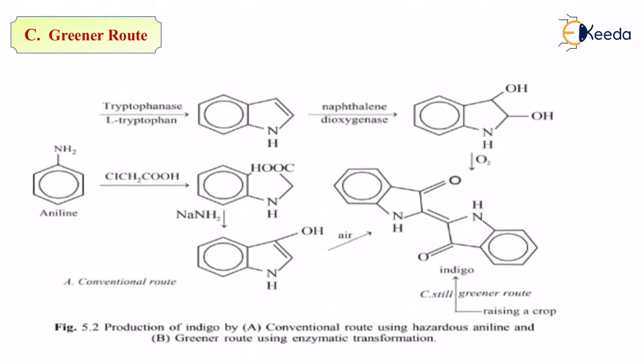This compound, in the presence of naphthalene dioxygenase — naphthalene being two benzene rings stuck together — undergoes reaction where two OH groups get attached at the ortho and meta positions. To this, if we add oxygen, the oxygenation process occurs, giving us indigo. So over here you have different methods: method A is the conventional one using aniline, and the second greener route uses the enzymatic pathway.